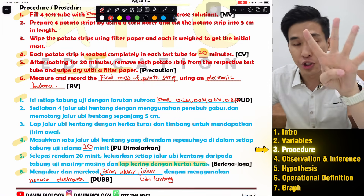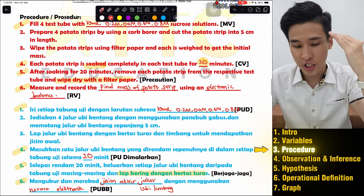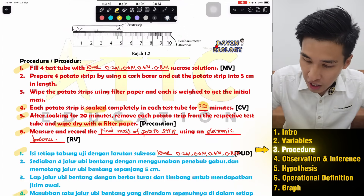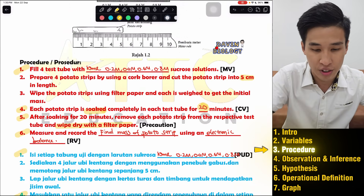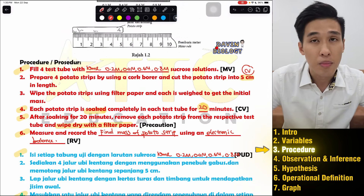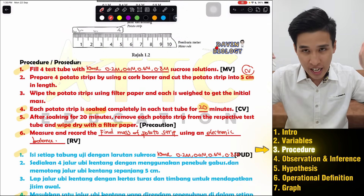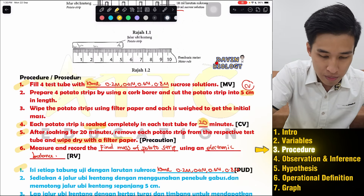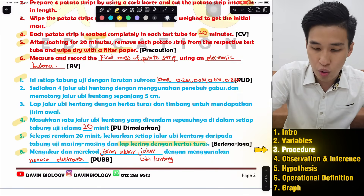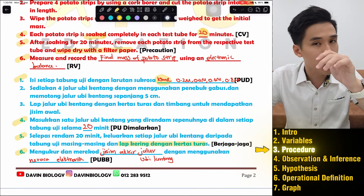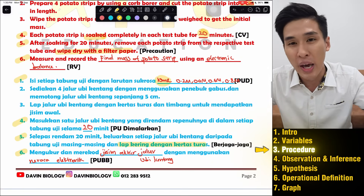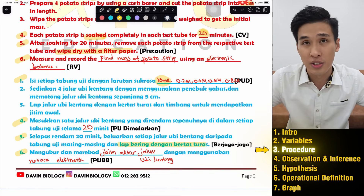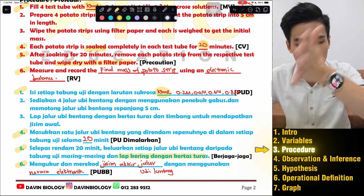So with just those four sentences, you get your four procedure marks — it's that simple. Remember, there can be more than one constant variable. The 5 cm length and the 10 ml volume are also constant variables. Constants are actually easy to get; you might even write them accidentally. Just remember to always mention the value of the constant.